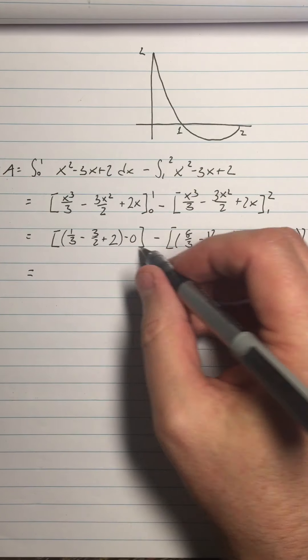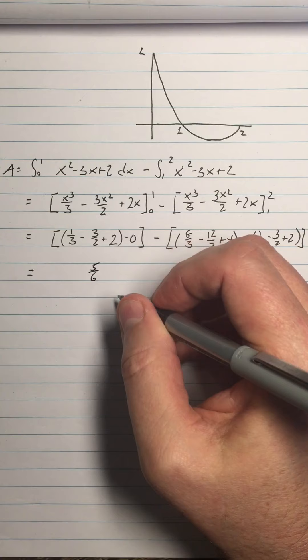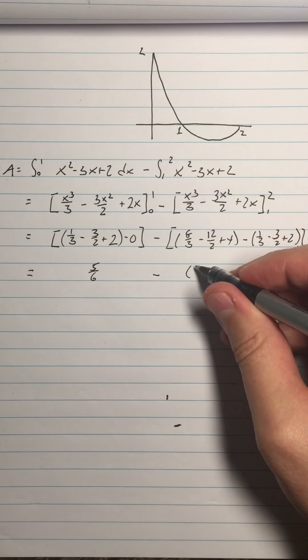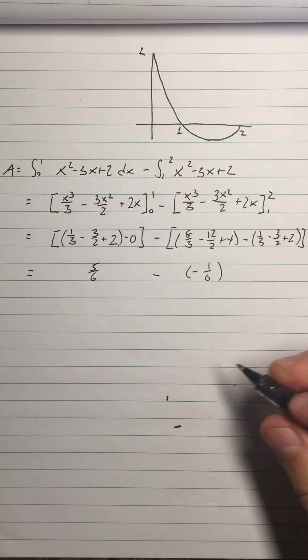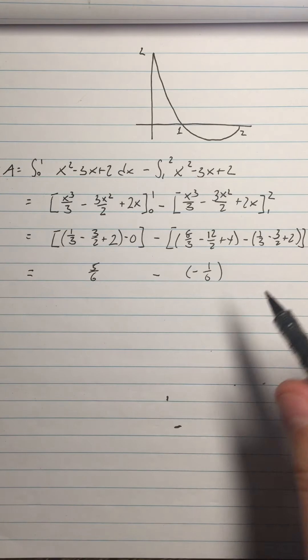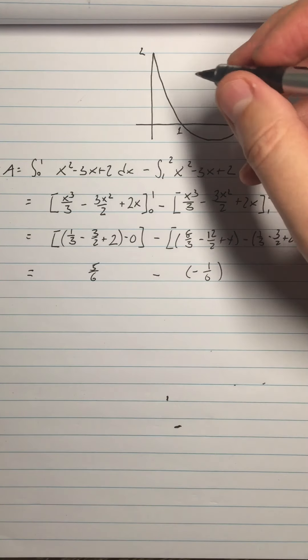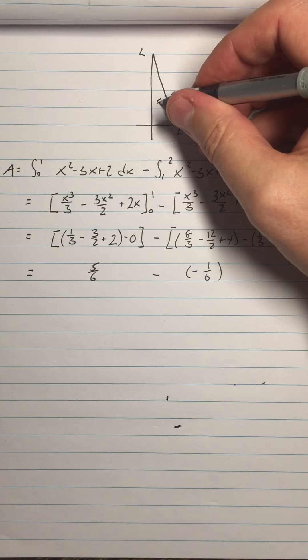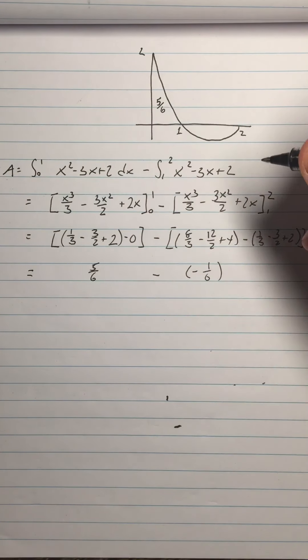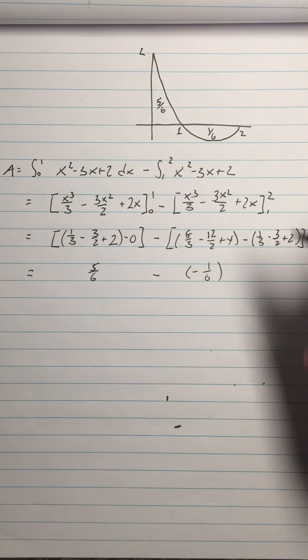But the other thing you can do is you can do this part and get 5 sixths, and do this part and get negative 1 sixth. The advantage of doing that, I'd spare you all the calculation there, but you can do it, but it gives you a clear idea that this area is 5 sixths, and this area is 1 sixths.